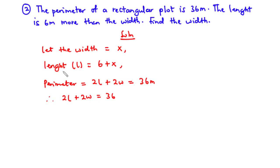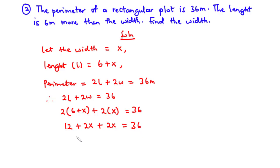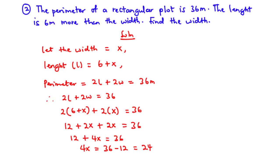Substituting: 2 times (6 plus x) plus 2 times x equals 36. Expanding: 12 plus 2x plus 2x equals 36, which gives 12 plus 4x equals 36. Transposing 12: 4x equals 36 minus 12 equals 24. Dividing by 4: x equals 6. Therefore the width of the rectangular plot is 6 meters.